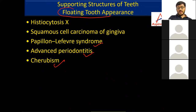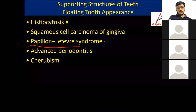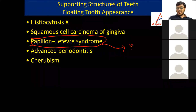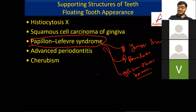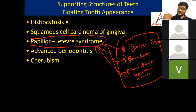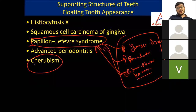Floating tooth appearance can be seen in cherubism, advanced periodontitis, Papillon-Lefèvre syndrome, squamous cell carcinoma of the gingiva, and histiocytosis X. Papillon-Lefèvre syndrome presents in younger age with periodontitis and palmar and plantar keratosis. In exams, an image showing a young child with periodontitis combined with keratosis of palms and feet indicates Papillon-Lefèvre syndrome. In cherubism and in advanced periodontitis or periodontal abscess, floating tooth appearance is also seen.